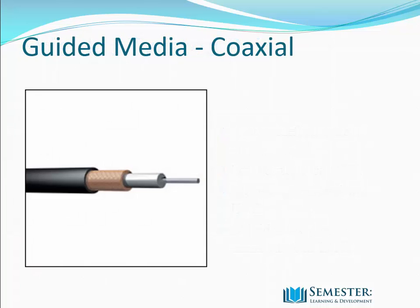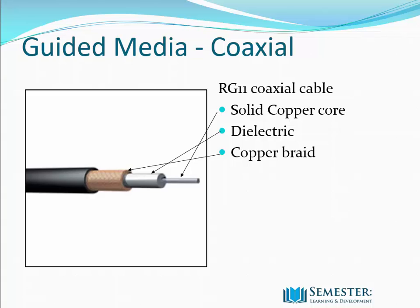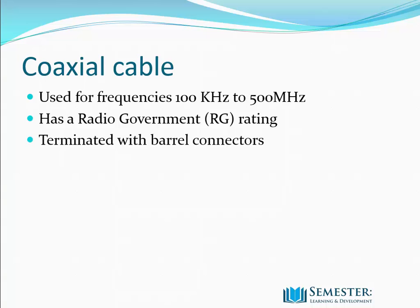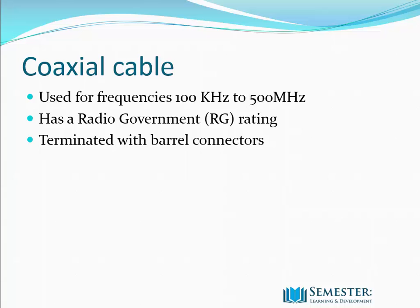Another type of guided media is the coaxial cable. As data rates and frequencies increased, there became a need for a different type of cable. The RG11 coax cable has a solid copper core, surrounded by a dielectric which is essentially an insulator. The other half of the pair is the copper braid, and it's all covered by insulation. Coax is used for frequencies of 100 kHz to 500 MHz, and each cable has a Radio Government rating, or RG. Instead of two wires, there's a central copper core surrounded by a dielectric sheath, which is then surrounded by a foil or braided copper conductor that also acts as a shield.